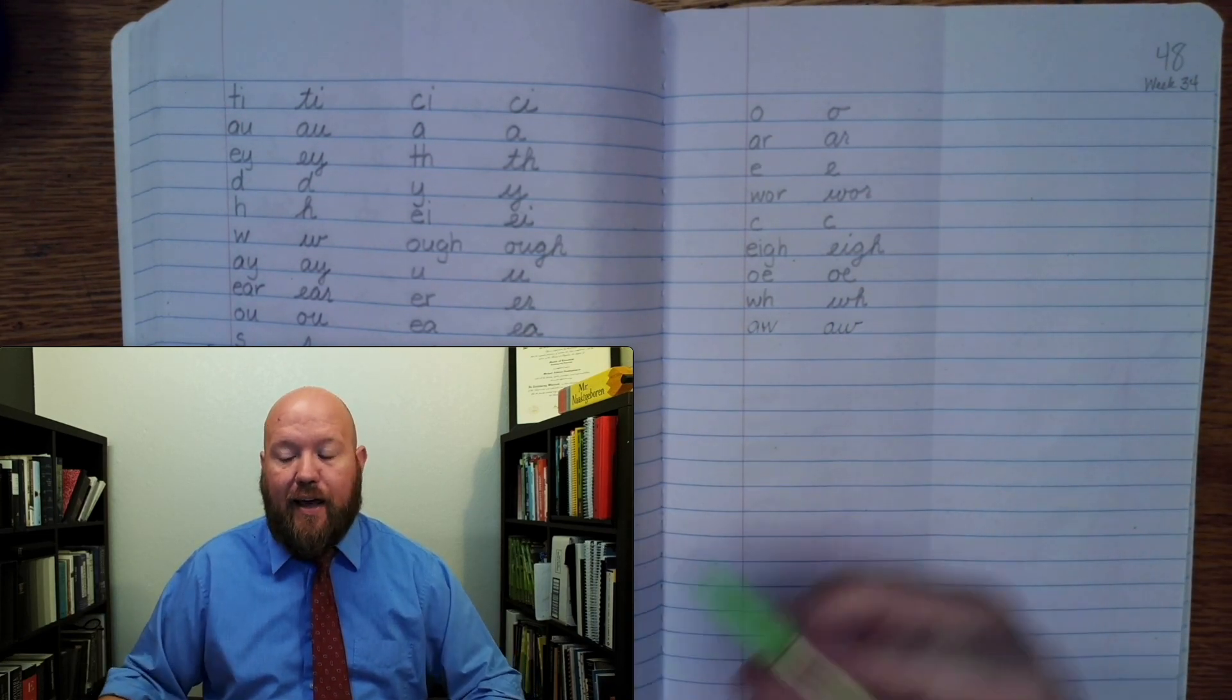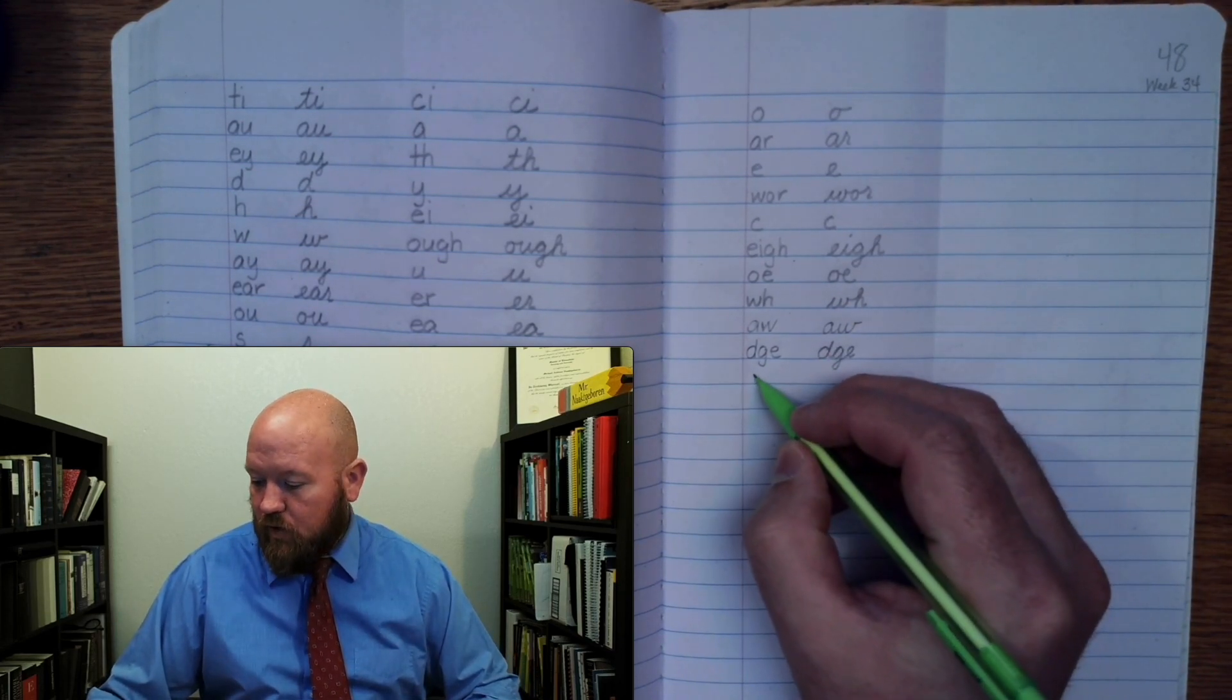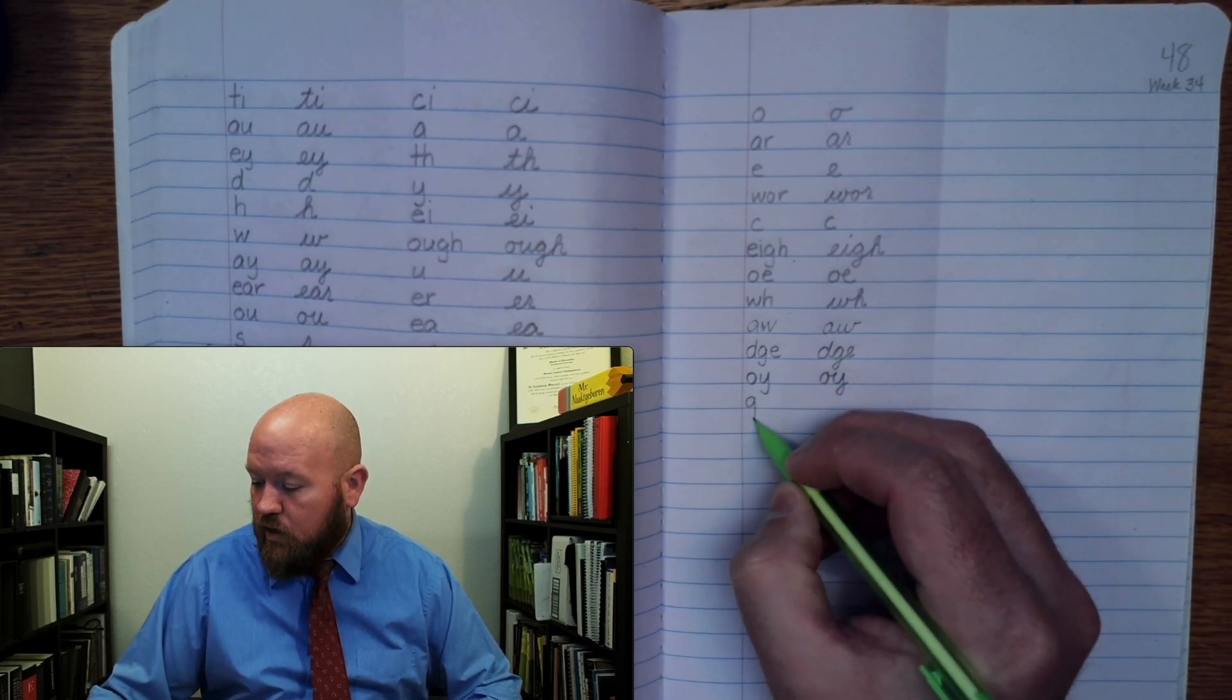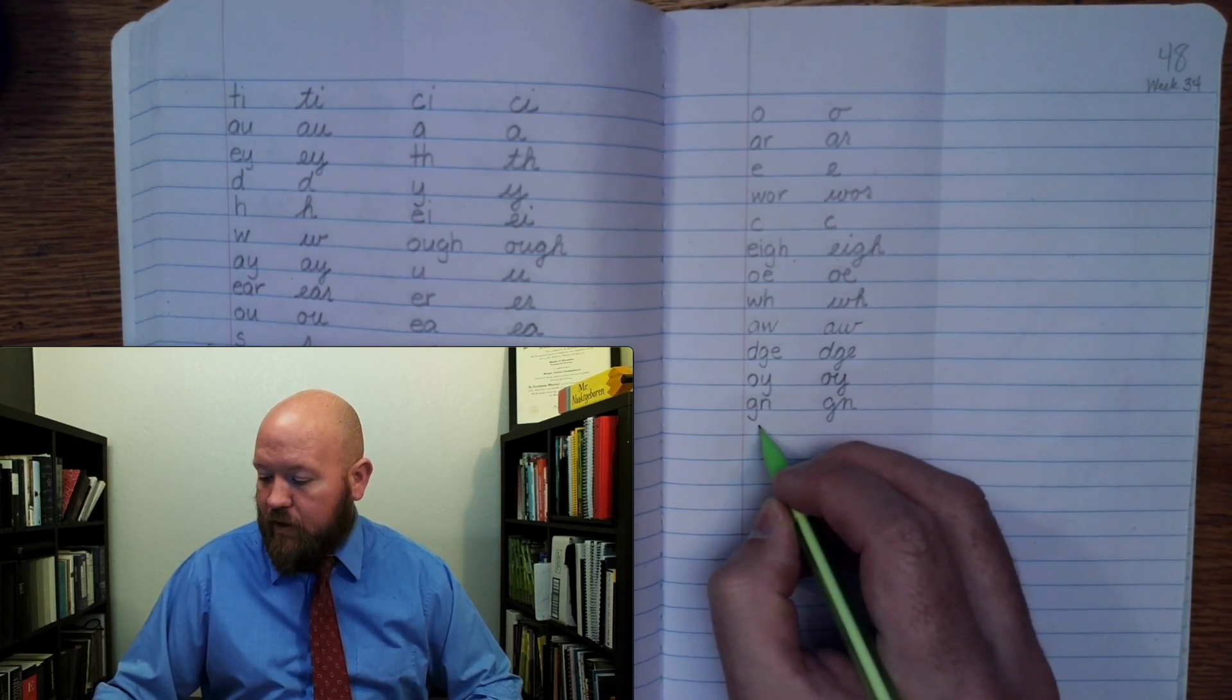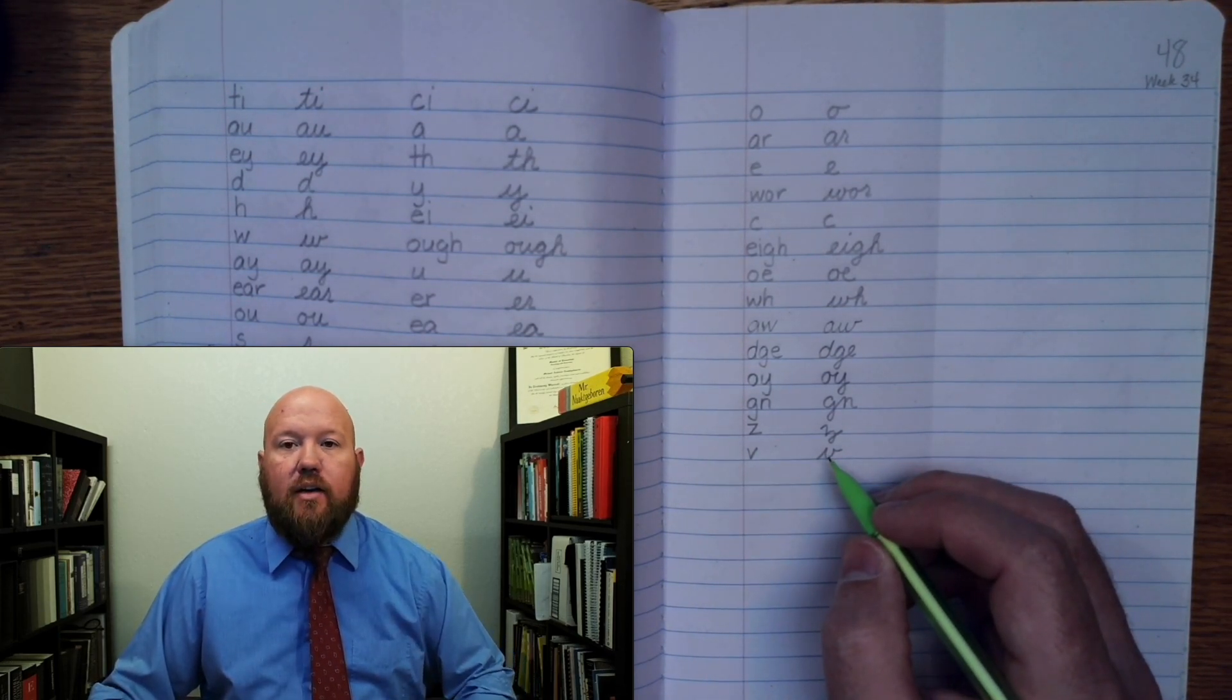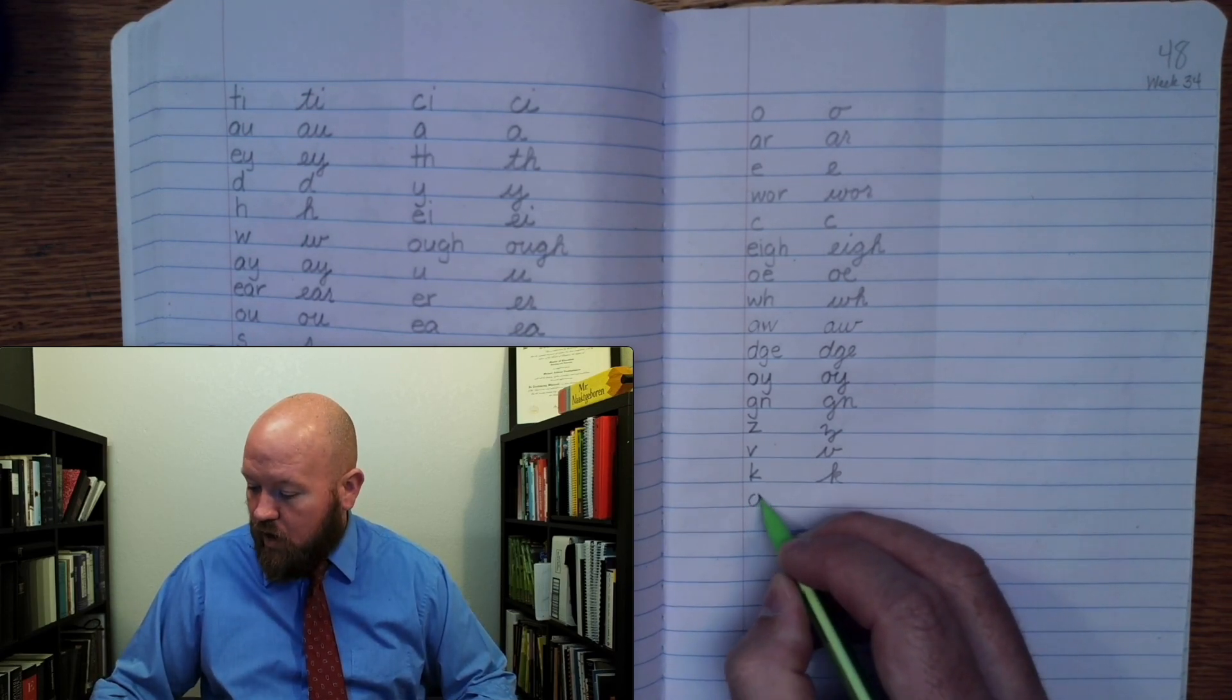Next one. J. J. Three letters. J. Three letters. J. Next one, N, two letters, N, two letters. Next one, Z, Z. Next one, Z, Z. Next one, K, K. Next one, O, boat, O, boat.